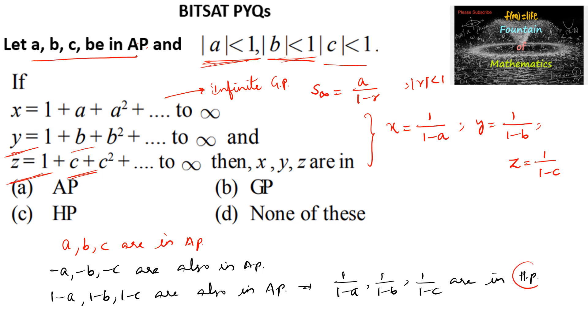Harmonic progression is the progression where if a, b, c are in AP, then 1 upon a, 1 upon b, 1 upon c are in harmonic progression. Hence we can say here, this is x, y, z are in harmonic progression, HP, so we can go with option c.